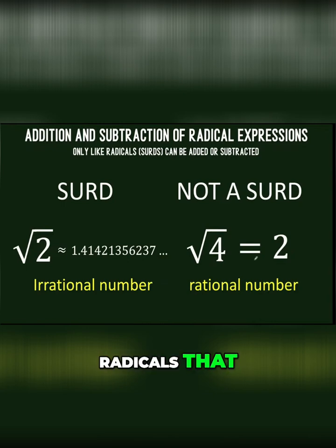So those radicals that are simplified as rational numbers, they are not surds. But those radicals that are irrational, they are the surds. And in addition and subtraction of radicals, we are adding the surds.